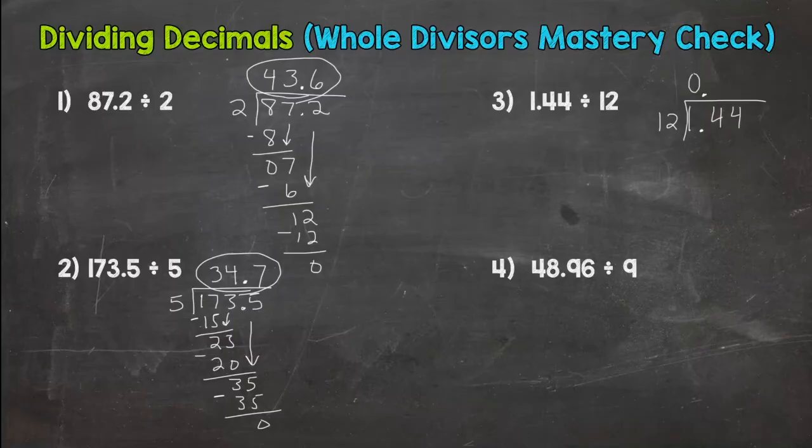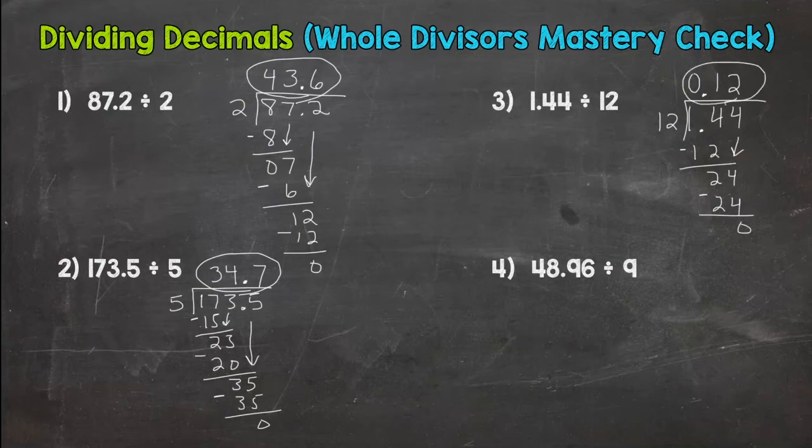I cannot pull any 12s out of one whole, so I can put a zero there to represent zero wholes. So how many 12s out of 14? Well, one. One times 12 is 12. Subtract, I get two. Bring down that four. 24 divided by 12 is two. Two times 12, 24. Subtract, I get a zero. So 12 hundredths.